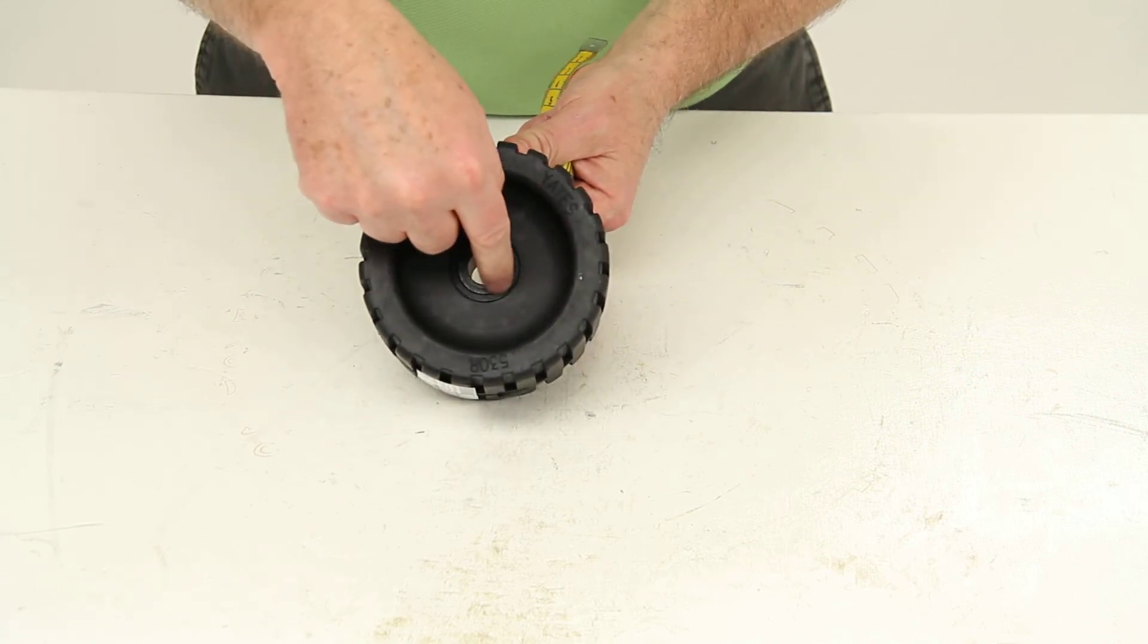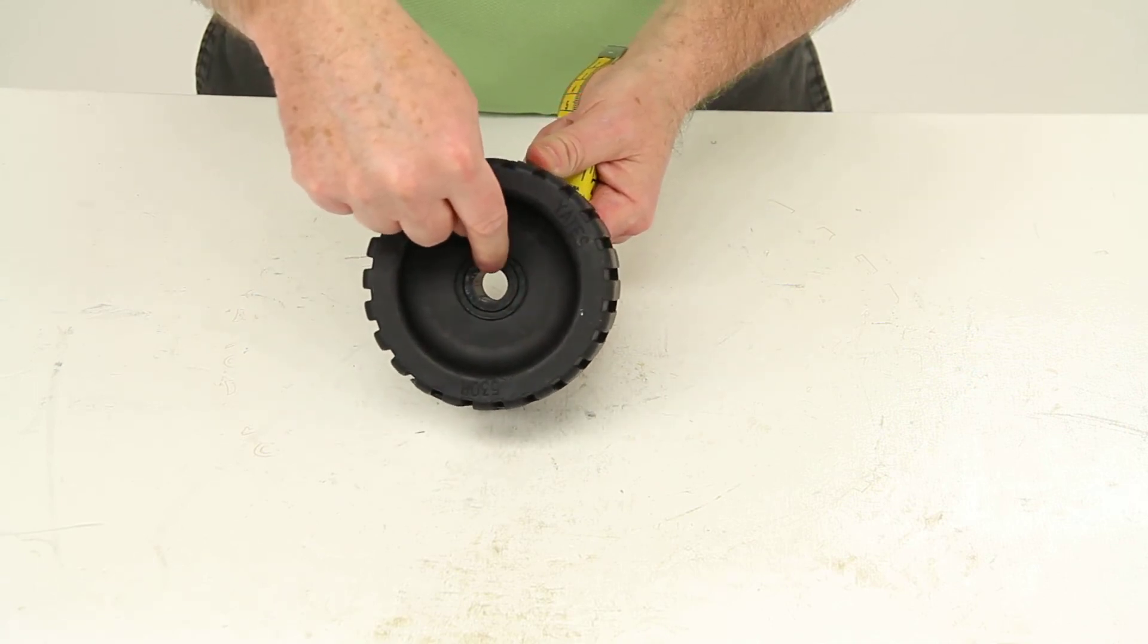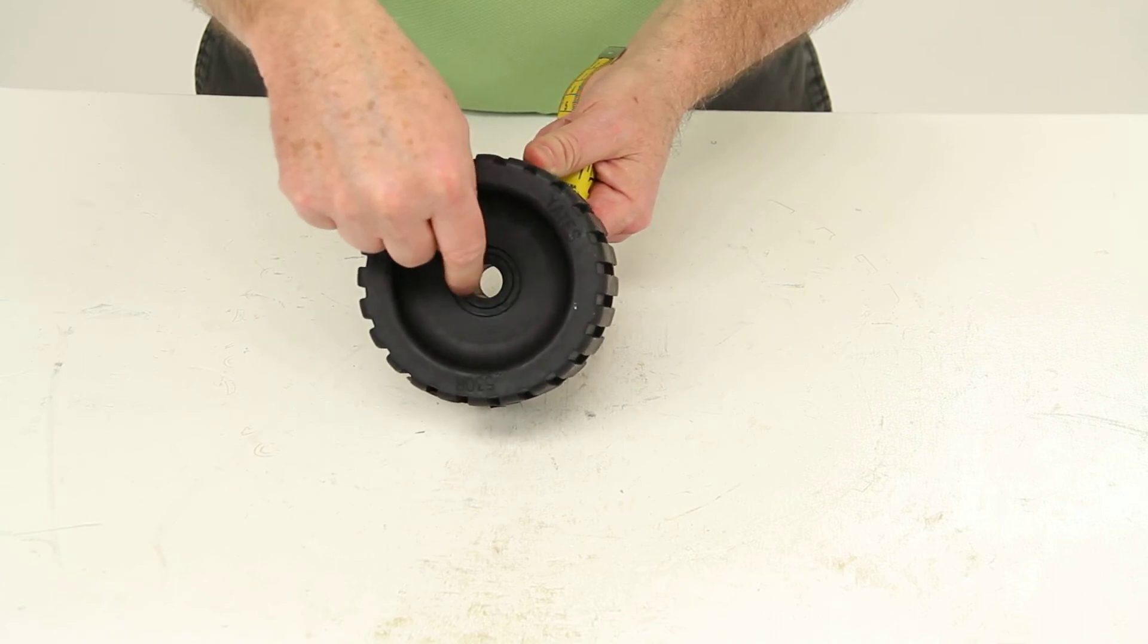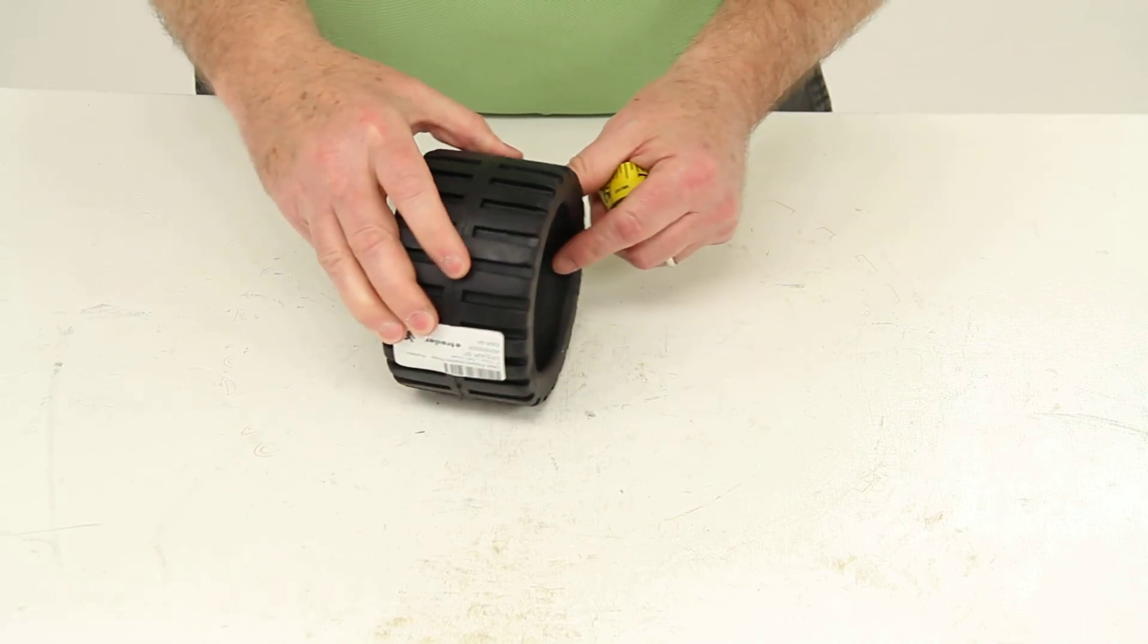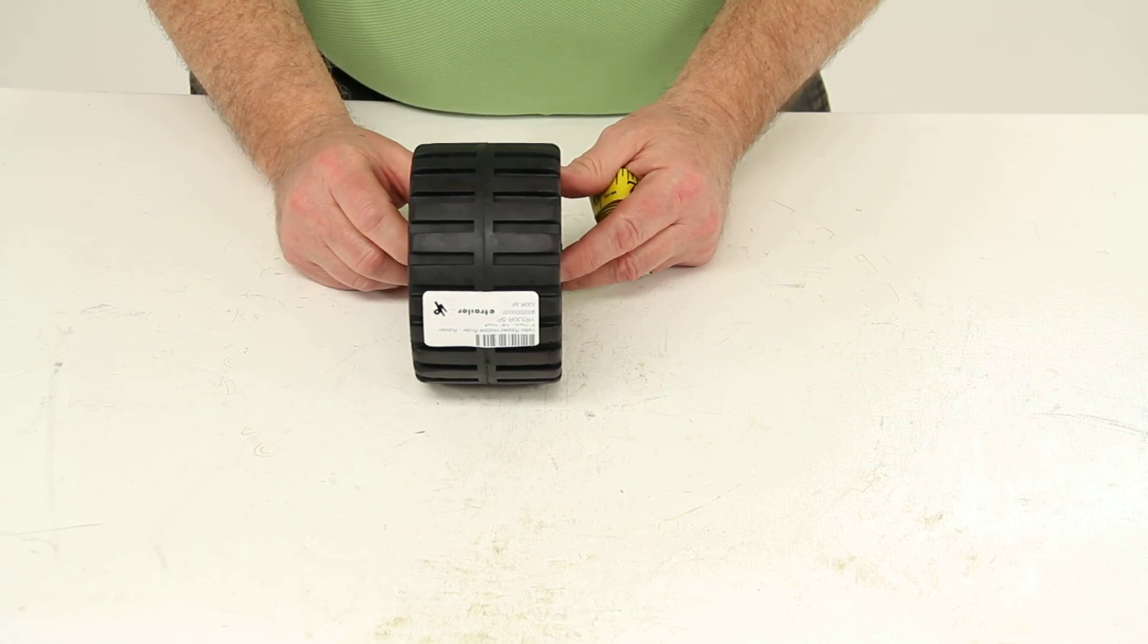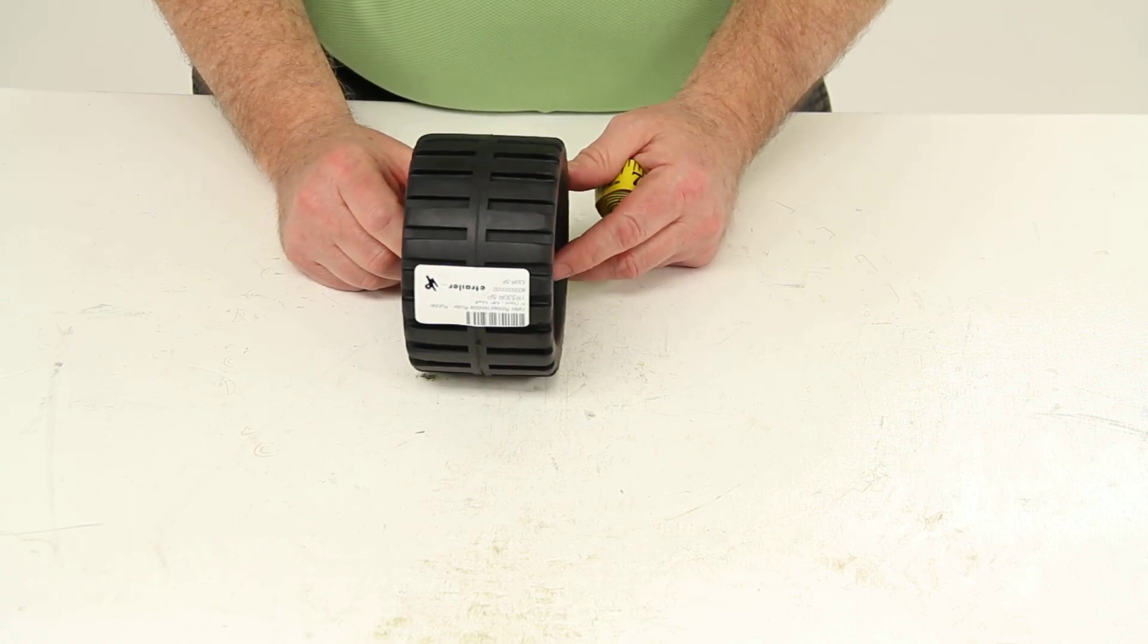And this roller is designed to fit on a roller bunk with five eighths inch diameter shaft. And that should do it for part number YR530R-5P.